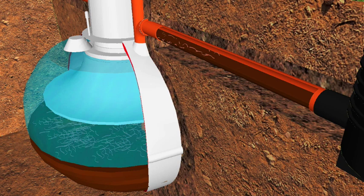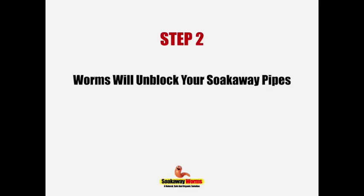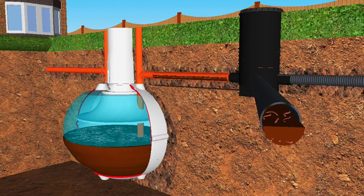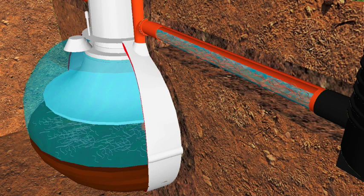The worms will very quickly start breeding and multiplying, making their way through that sludge and through the pipes, and very quickly these worms will penetrate your entire soak away pipe system. Step two: the worms will very quickly start to eat and digest the sludge, fat, and grease that are blocking your soak away pipes. As the worms eat and remove the sludge, the soak away pipes will allow the wastewater to flow freely once again.